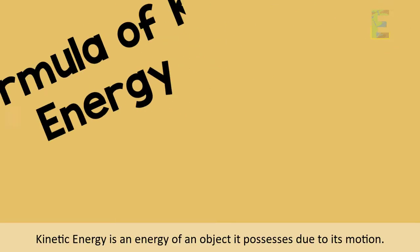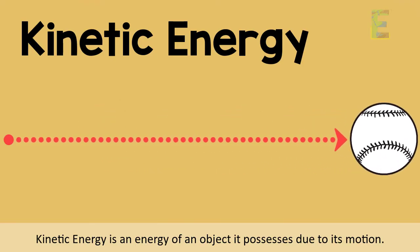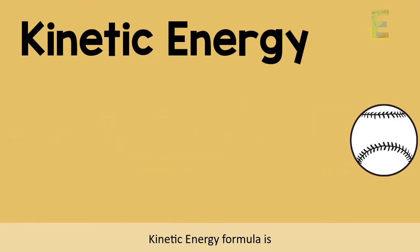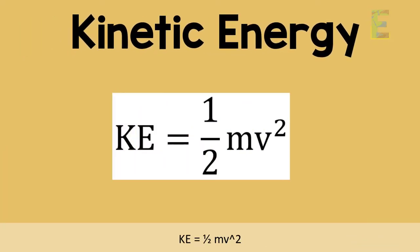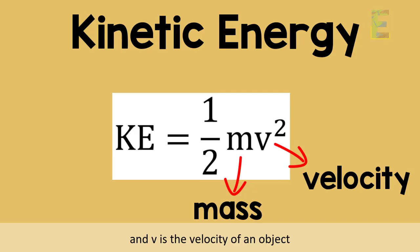Kinetic energy is the energy an object possesses due to its motion. The kinetic energy formula is KE equals one half mv squared, where m is the mass of an object and v is the velocity of an object.